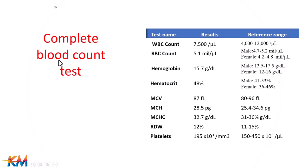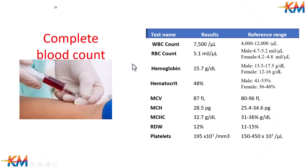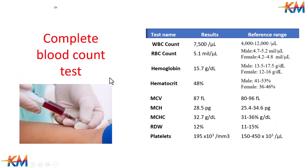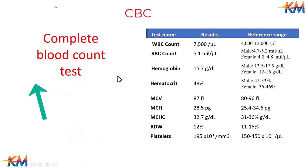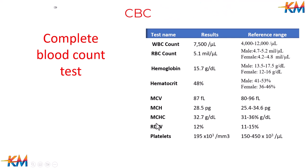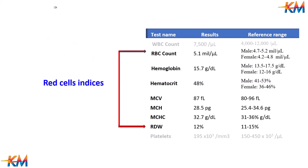A complete blood count test is performed in the medical laboratory after a blood sample is drawn from the patient. The CBC test gives information about all cells present in the blood, which include red blood cells, white blood cells, and platelets. Here we will focus on the number of red cells, which are called red cell indices.